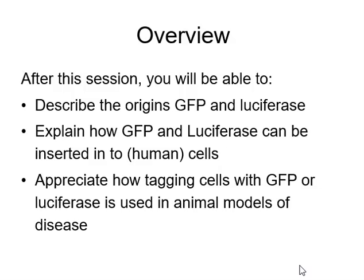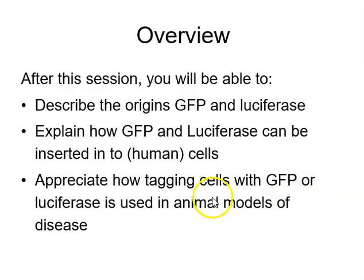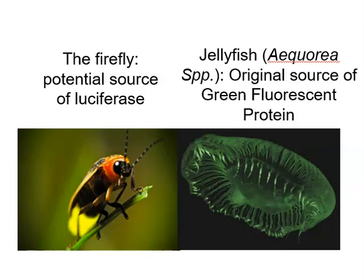Here's an overview of what we're going to talk about. We'll cover the origins of green fluorescent protein (GFP) and luciferase, and explain how both can be inserted into human cells. We'll also look at how GFP has been modified by genetic modification to make it a useful tool for studying human cells, and examine GFP and luciferase models to study disease in animal models, looking at the relative benefits of each.